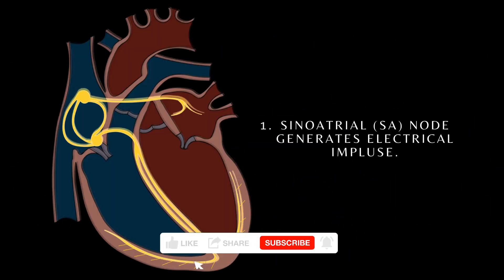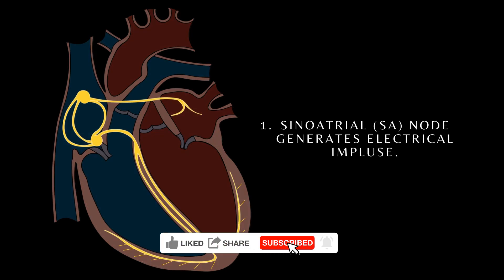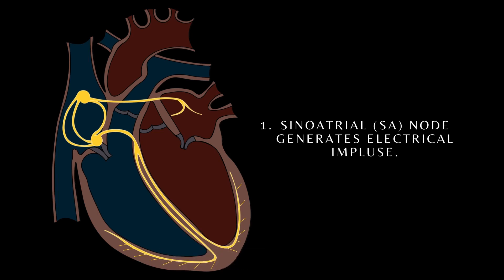Let's look at the electrical conduction sequence. The sinoatrial node generates an electrical impulse that propagates throughout the right atrium via the internodal tracts and to the left atrium via Bachmann's bundle.